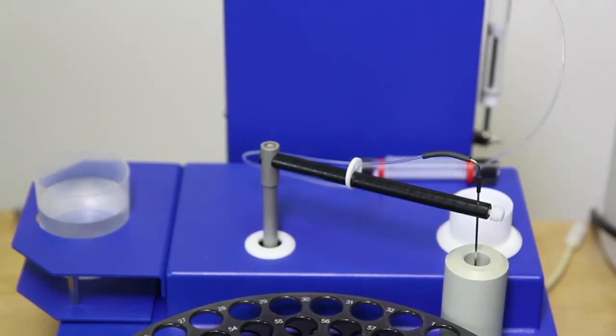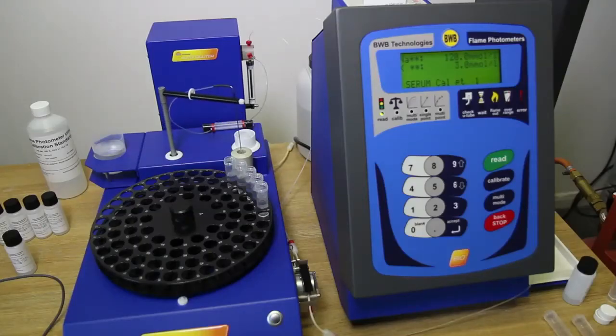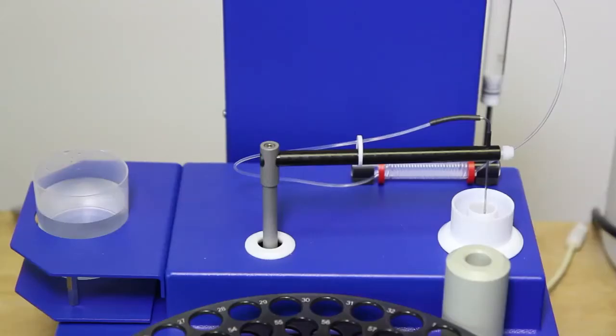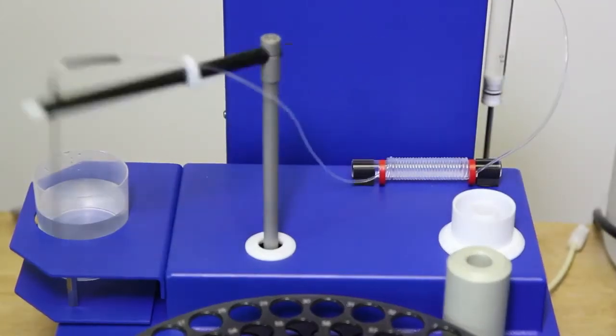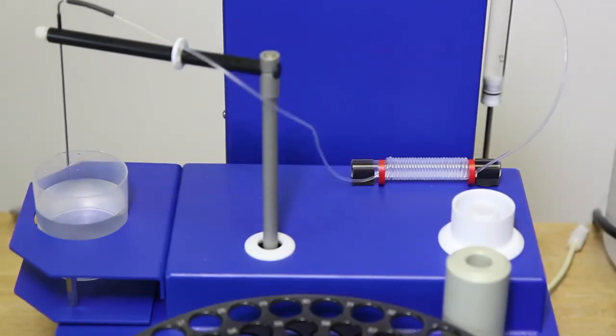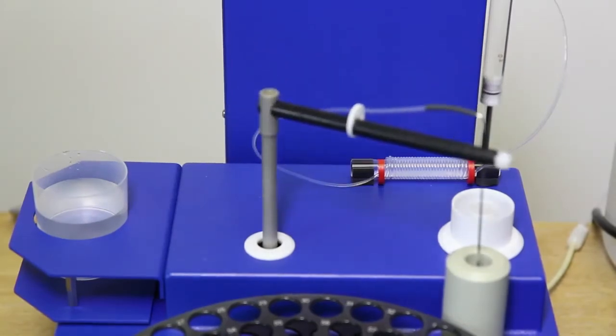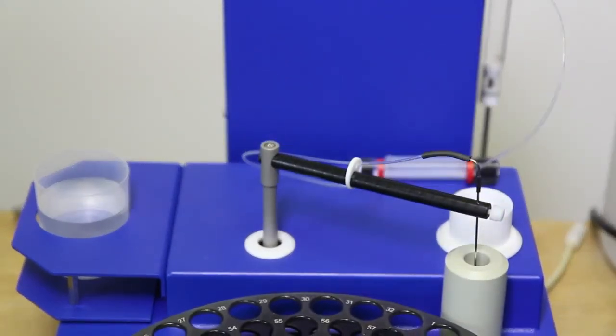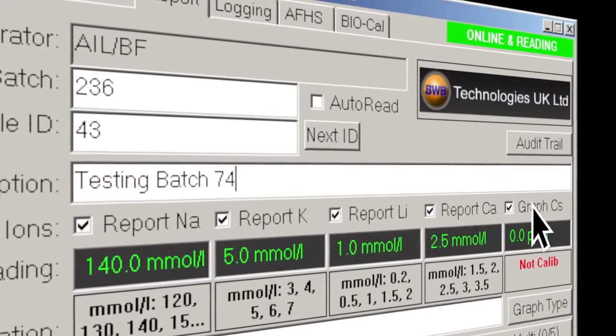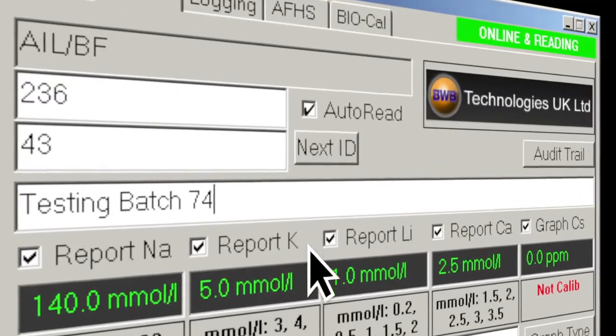The testing will be paused if the reservoir runs out of diluent. Upon topping it back up, the testing will automatically start again from where it left off. A blank correction is performed at the start of each test. The test should then continue to completion without further intervention. Each result will be printed, if the printer is on, and sent to the FPPC software. These can be captured in the report tab by checking the auto-read checkbox.